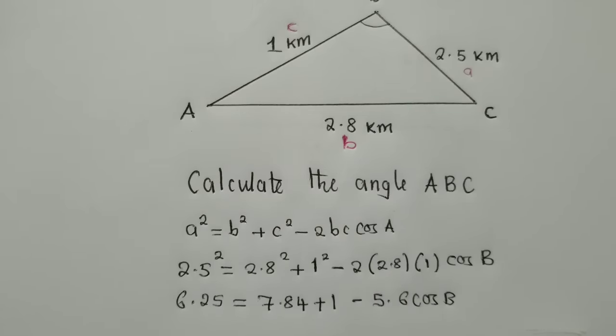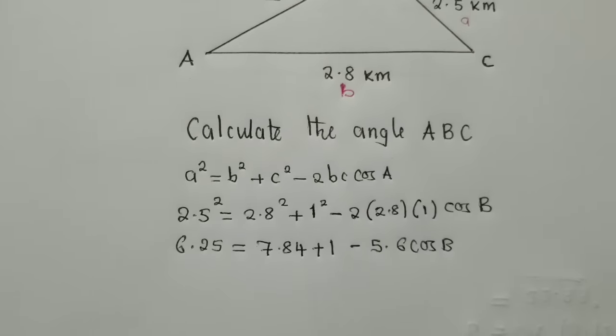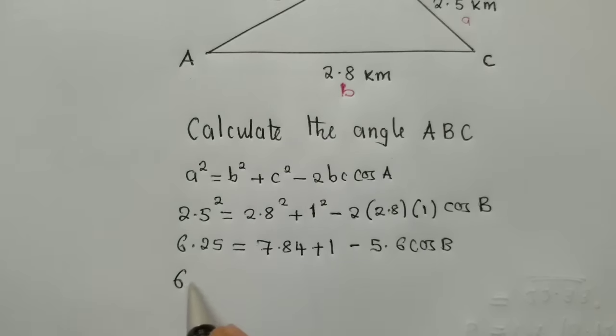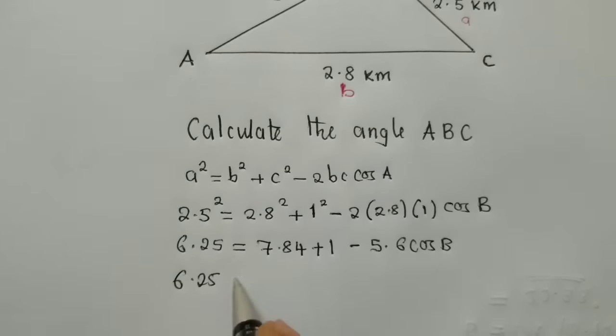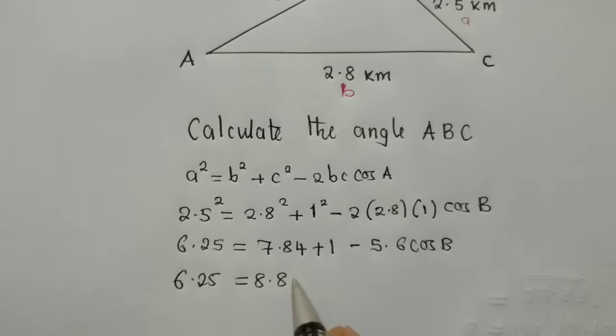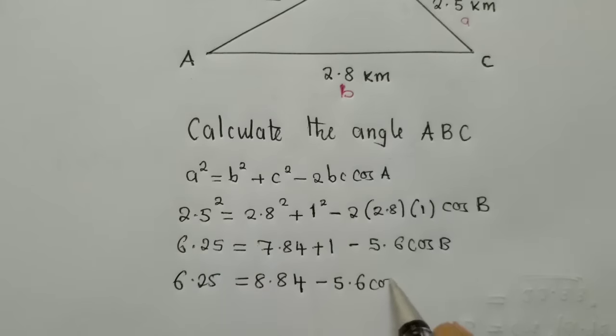So now from this stage, we apply our mathematics here. So this, of course, would be 6.25 equal to 8.84 minus 5.6 cos B.